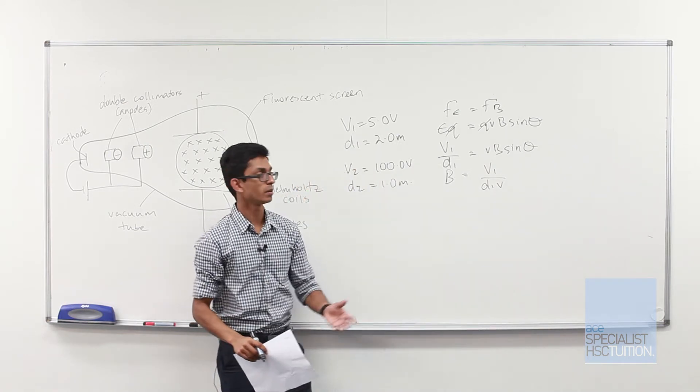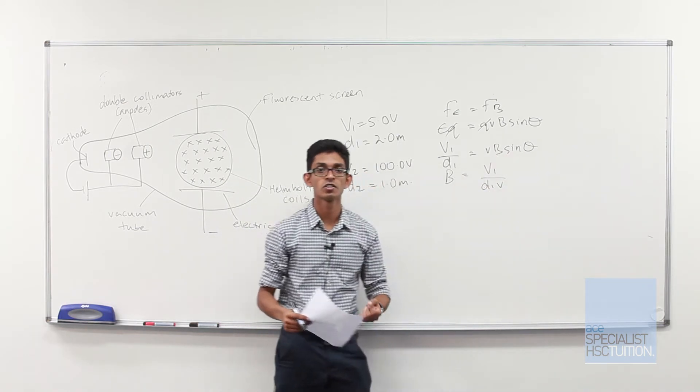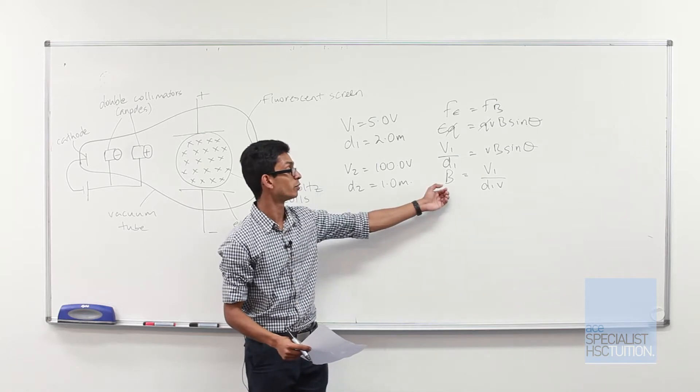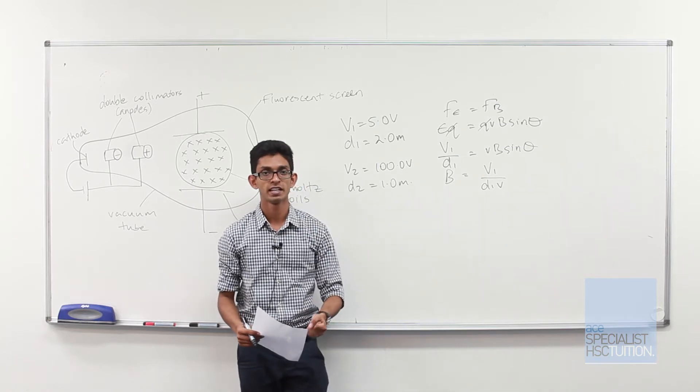I'm able to disregard sin theta, because in this case theta is 90 degrees, so sin theta is 1. Now we have an equation where B is our subject.